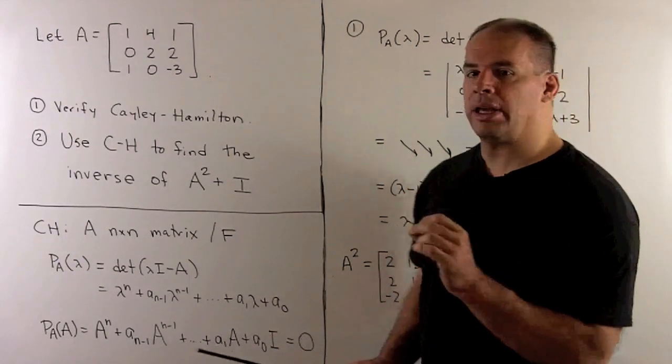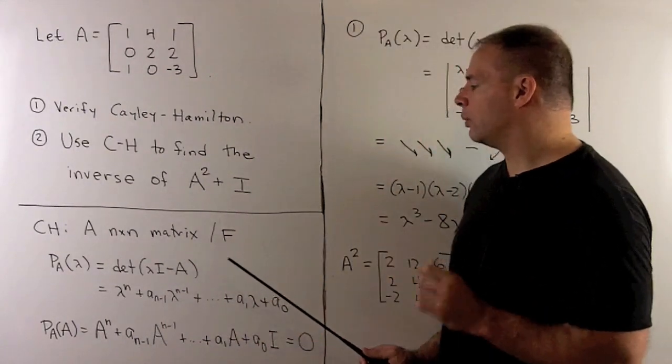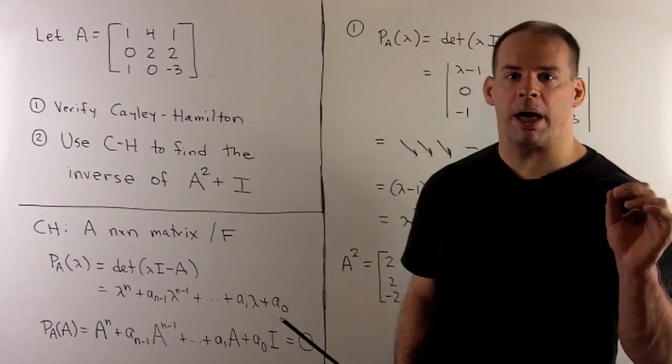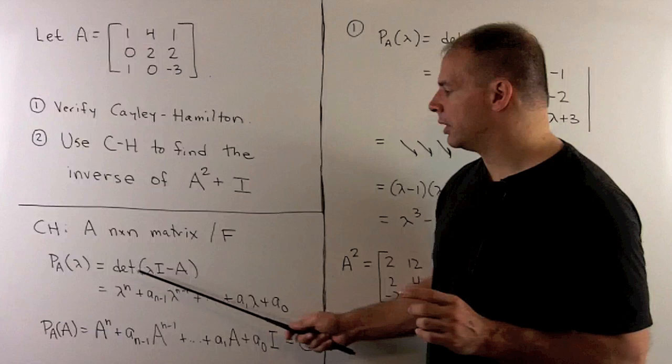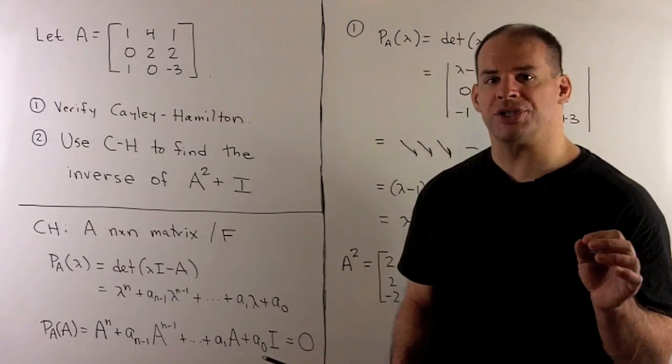Now, the Cayley-Hamilton theorem states A is n by n matrix with entries in the field F. We form a characteristic polynomial of A. So, we'll get a monic polynomial of degree n with coefficients in our field.